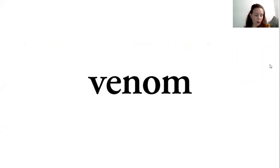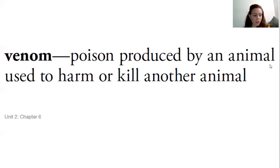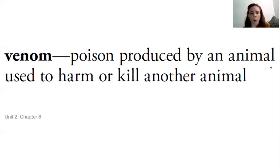Moving on, our next word is venom: V-E-N-O-M. V is a consonant, E is a vowel, N is a consonant, O is a vowel, M is another consonant. Venom — two vowel sounds, two syllables. And venom is poison produced by an animal used to harm or kill another animal. So maybe this is so that predators do not try to attack the animal that has venom. Let's wait on our picture for that one as well, and then we can come back to that later when we have more information about which reptiles are venomous — they have venom inside of them.